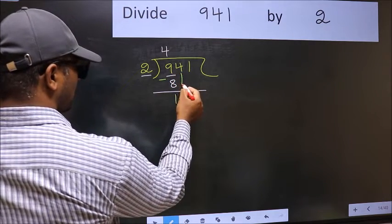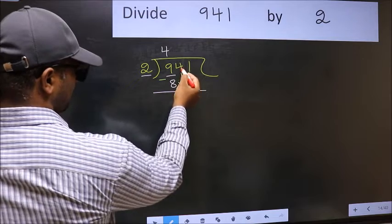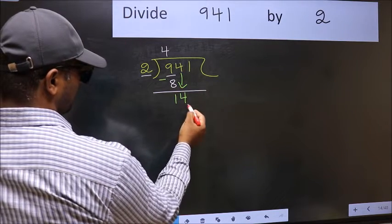After this, you should bring down the beside number. So 4 down.